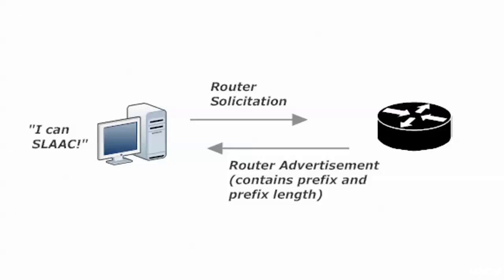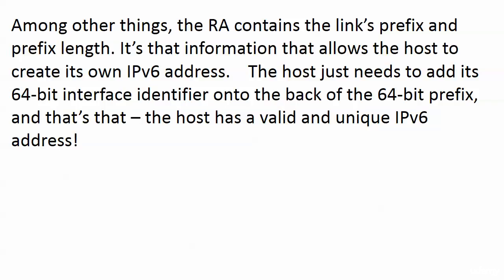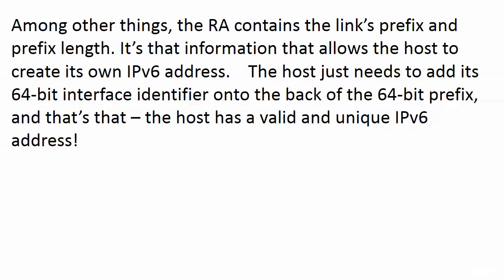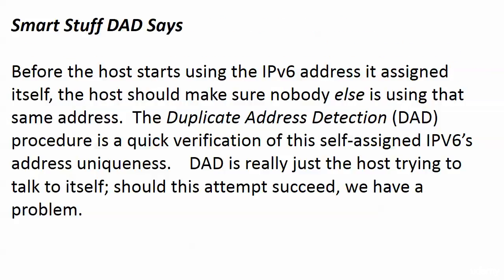Some of the information in the router advertisement includes the prefix and the prefix length. That information allows the host to create its own IPv6 address — all it needs to do is take its 64-bit interface identifier and tack it onto the back of the 64-bit prefix, giving us a valid 128-bit IP version 6 address. We're assuming it's unique, but it would be a good idea to have that checked — and DAD (Duplicate Address Detection) is going to handle that, which we'll cover in the next video.